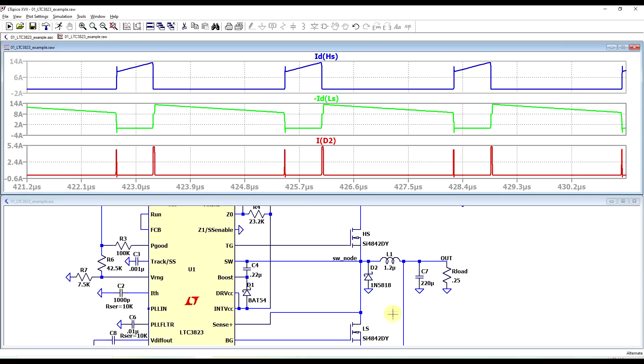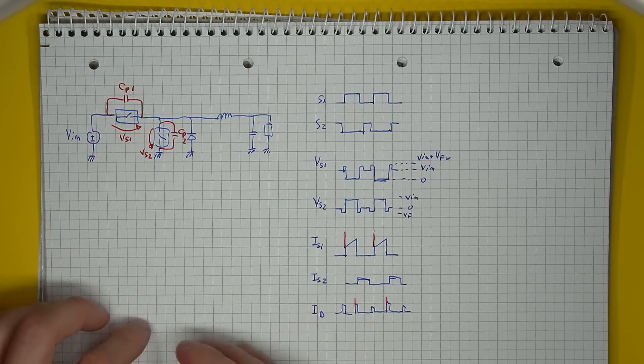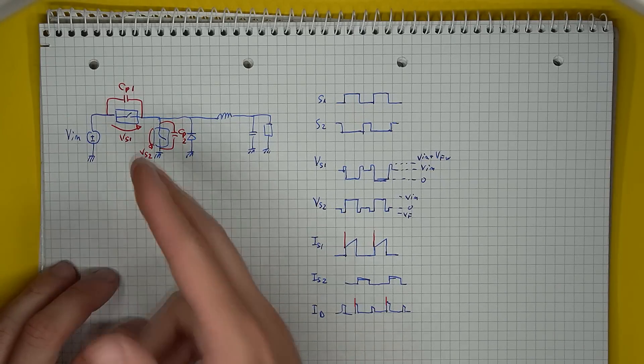The switches are not perfect, they all have some amount of built-in parallel capacitance. So when we also consider this capacitance, when one switch closes, apart from the useful inductor current that should be going through it, it also ends up discharging its own parallel capacitance.